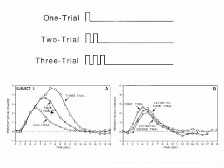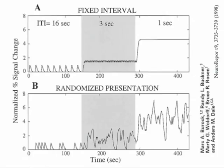With the three-trial condition, what we see is in effect a single response with no obvious way of knowing that there were three discrete events that gave rise to it. This is a classic property of a low-pass filter. In the next slide we'll see some clever ways that Buckner, Dale, and a student of theirs, Mark Burrock, devised to get around this constraint.